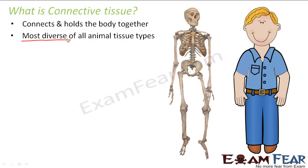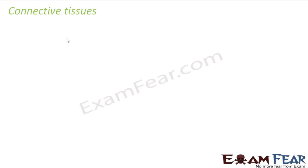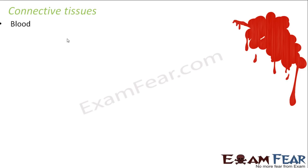Before studying the types, we will look at the structure of a connective tissue — just as we did for epithelial tissue, which had a basal side and a free side. Similarly, in the case of connective tissue, let us see how the structure looks. But first, let us identify some of the important connective tissues present in our body.